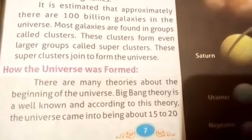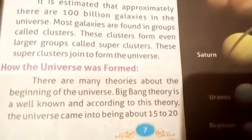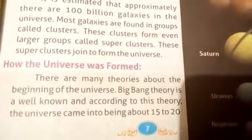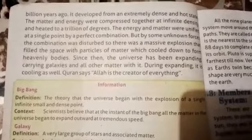There are many theories about the beginning of the universe. The Big Bang theory is well known, and according to this theory, the universe came into being about 15 to 20 billion years ago. It developed from an extremely distant and hot state. The matter and energy were compressed together at infinite density and heated to trillions of degrees, unified at a single point. But by some unknown forces, the combination was disturbed, so there was a massive explosion that filled space with particles of matter which cooled down to form heavenly bodies.